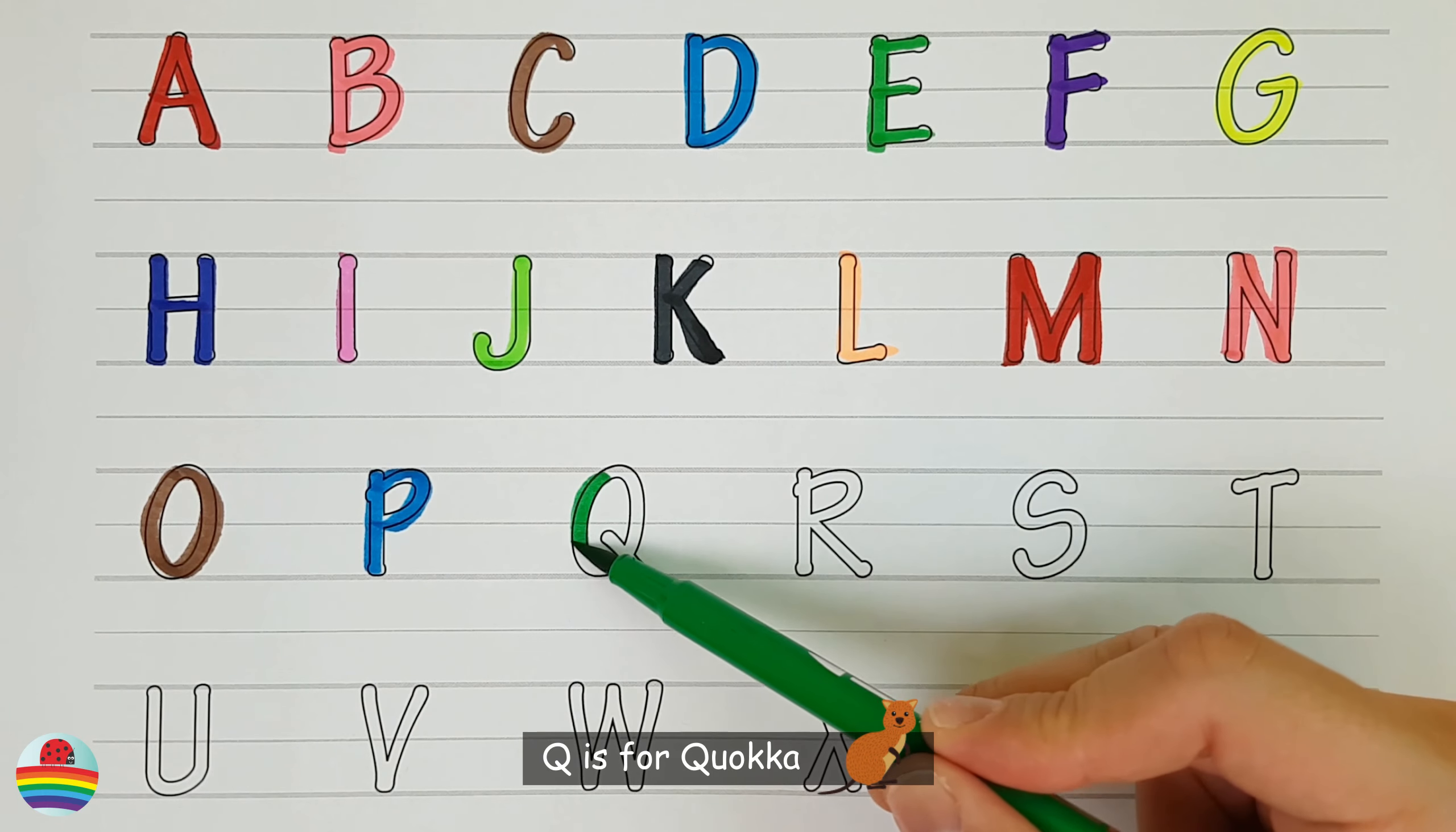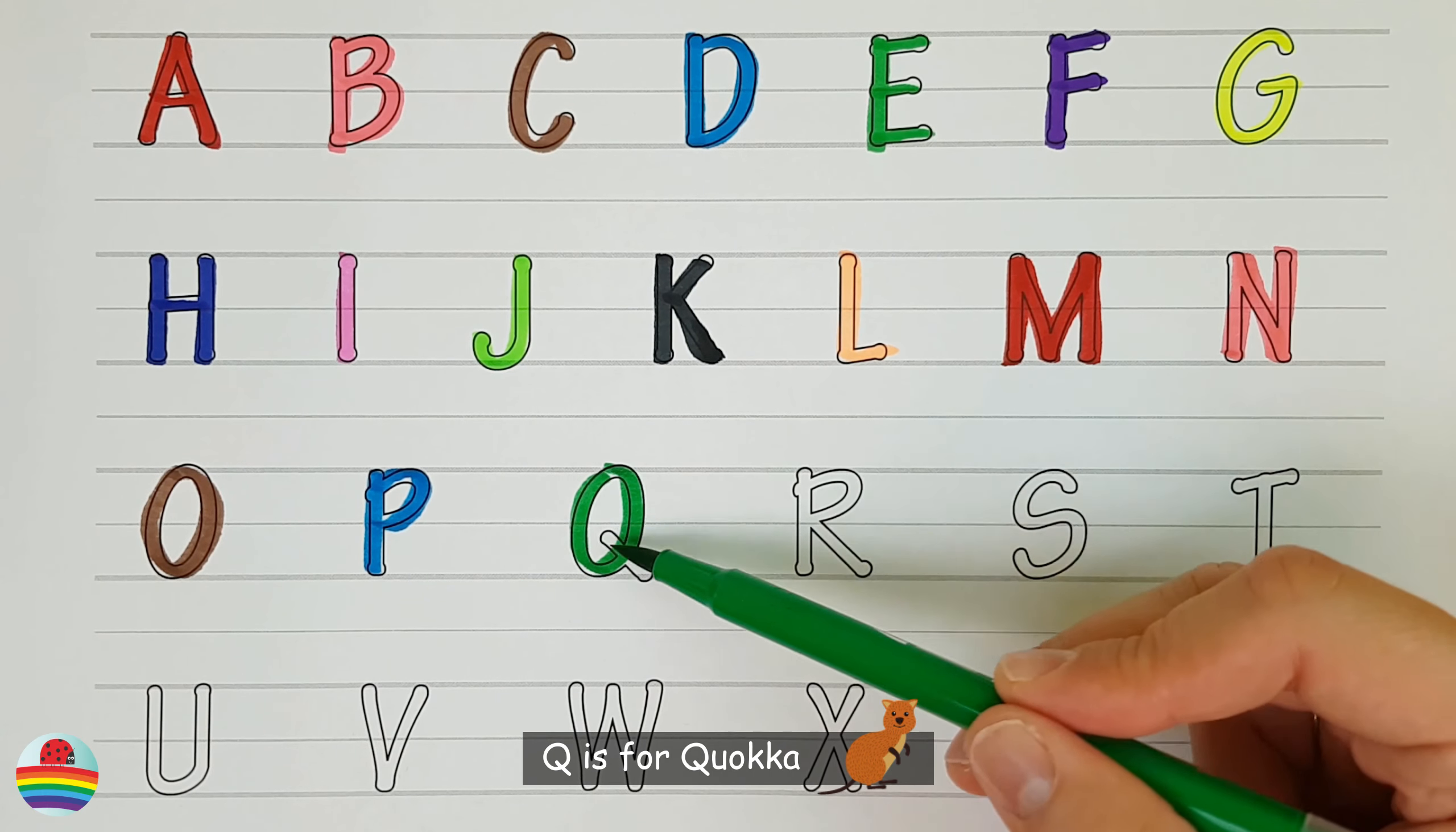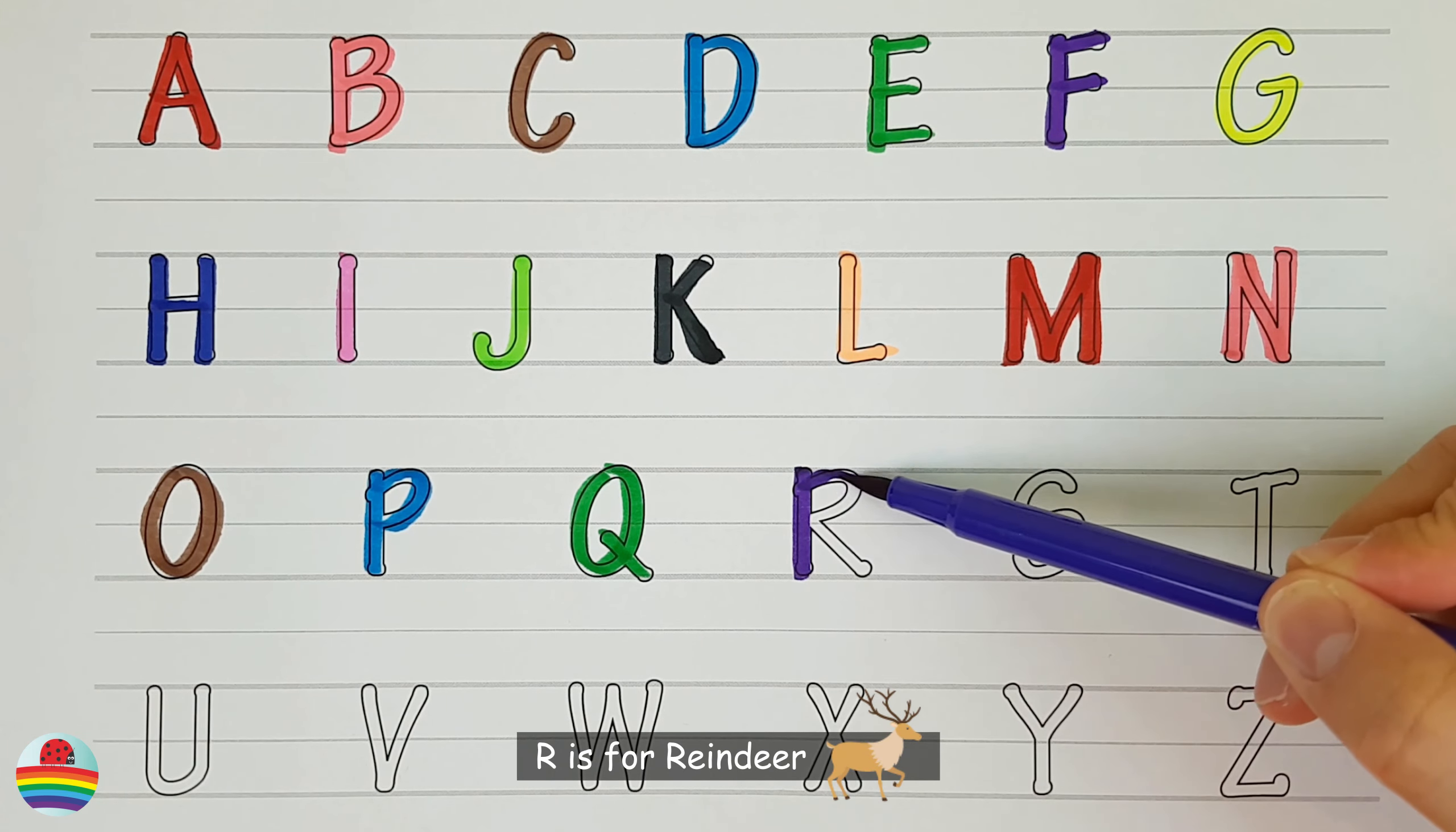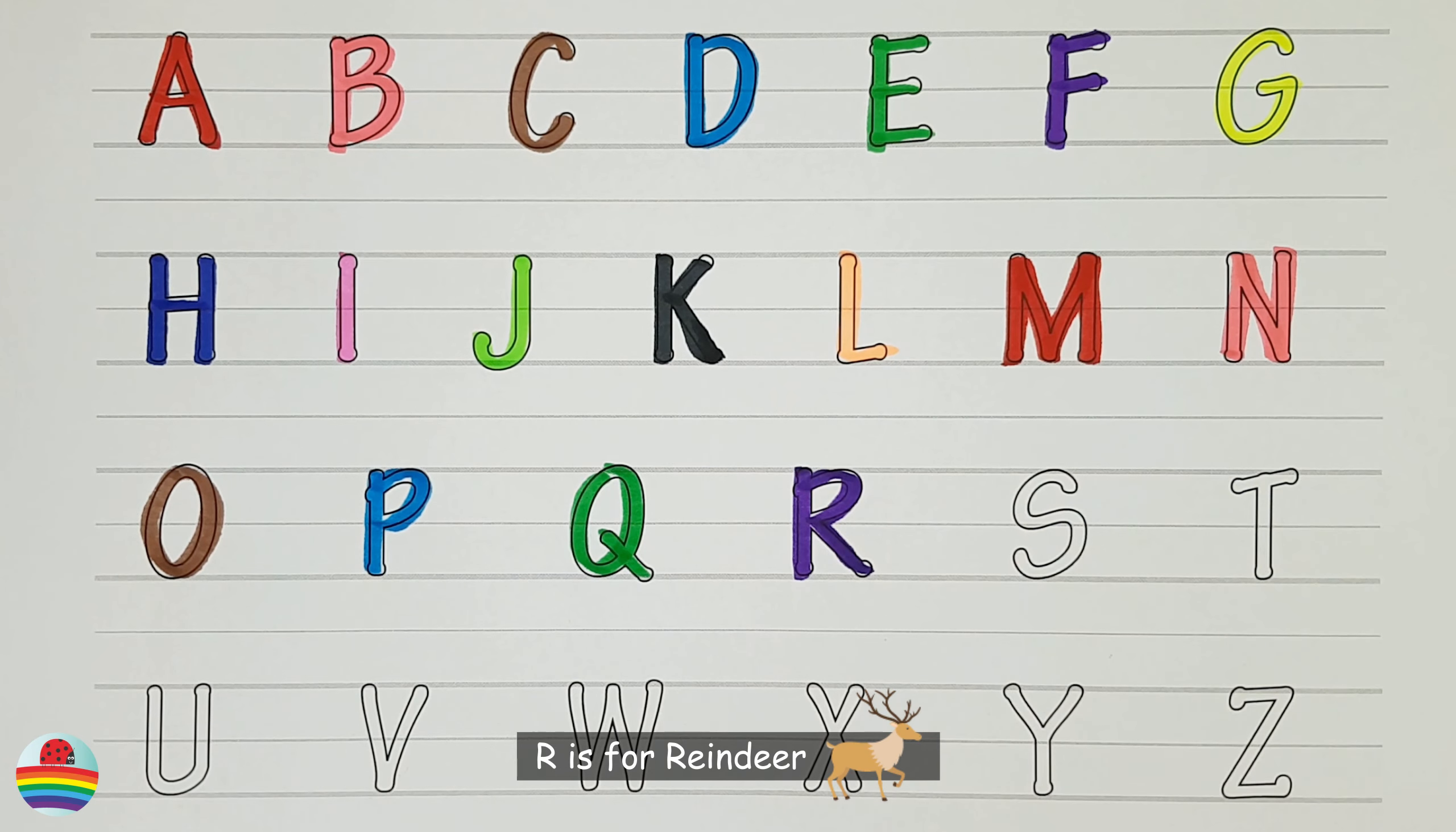Q. Q is for quokka. Q. R. R is for reindeer. R.